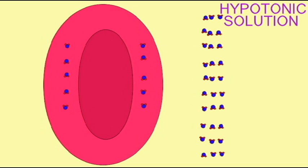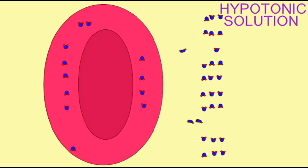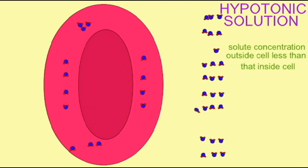When a cell is in a hypotonic solution, the solute concentration around the cell is less than what it is inside the cell. In fact, this hypotonic solution may even be pure distilled water, which would have no solutes whatsoever.